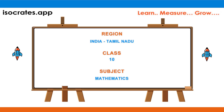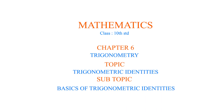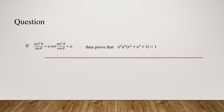Welcome to isocrats.app channel, a platform where you learn, measure, and grow. In this video we will show a quick and simple way to solve the question: if cos²θ/sinθ = p and sin²θ/cosθ = q, then prove that p²q²(p²+q²+3) = 1.